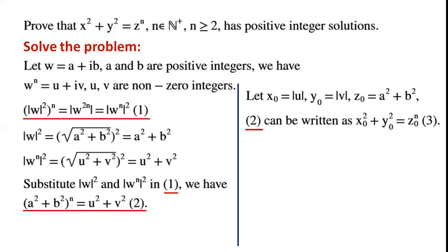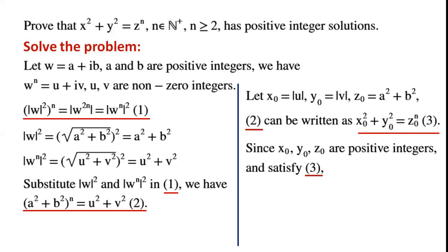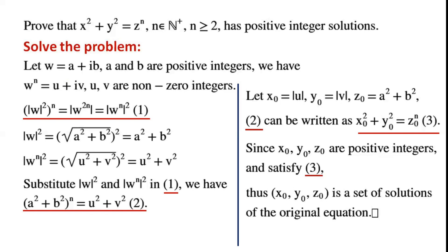Equation 2 can be written as x₀² + y₀² = z₀ⁿ. Since x₀, y₀, z₀ are positive integers and satisfy equation 3, thus x₀, y₀, z₀ is a solution of the original equation. The proof is now complete.